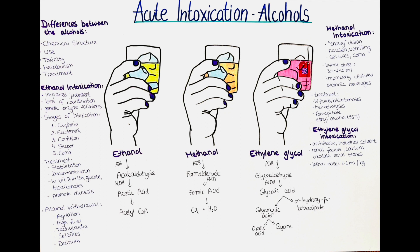In conclusion, acute intoxication with alcohols such as ethanol, methanol and ethylene glycol can have serious consequences on a person's health and well-being. While ethanol is the most commonly consumed and legal alcohol, methanol and ethylene glycol are not intended for consumption and can be fatal when ingested. It is important to seek medical attention immediately if you or someone you know experiences symptoms of acute alcohol intoxication, as prompt treatment can save lives. Thank you very much and hopefully see you again in the next video.